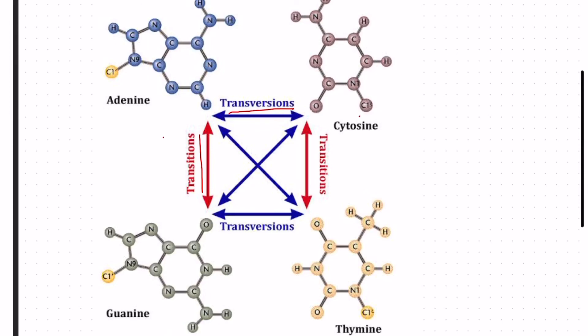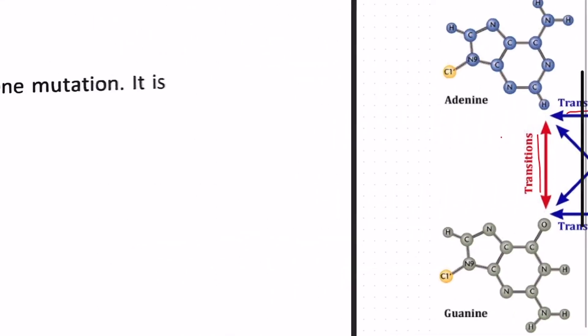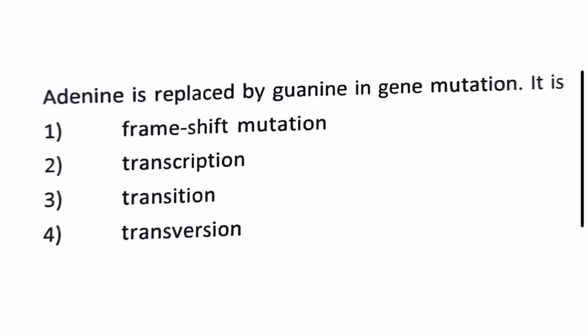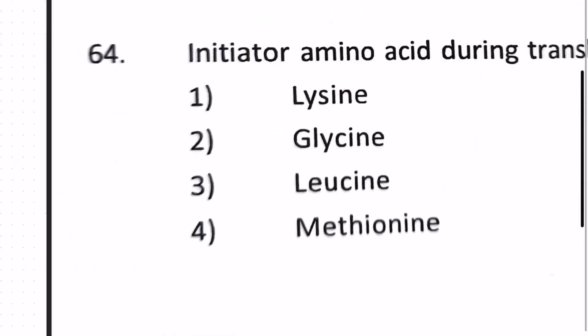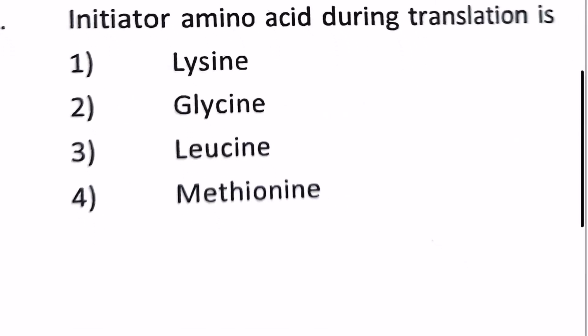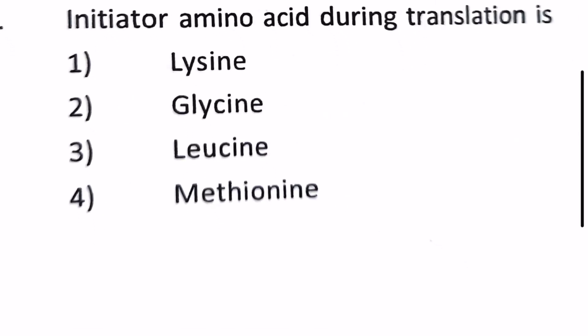Next: initiator amino acid during translation is? During translation the initiator amino acid will be methionine. Our answer is 4.